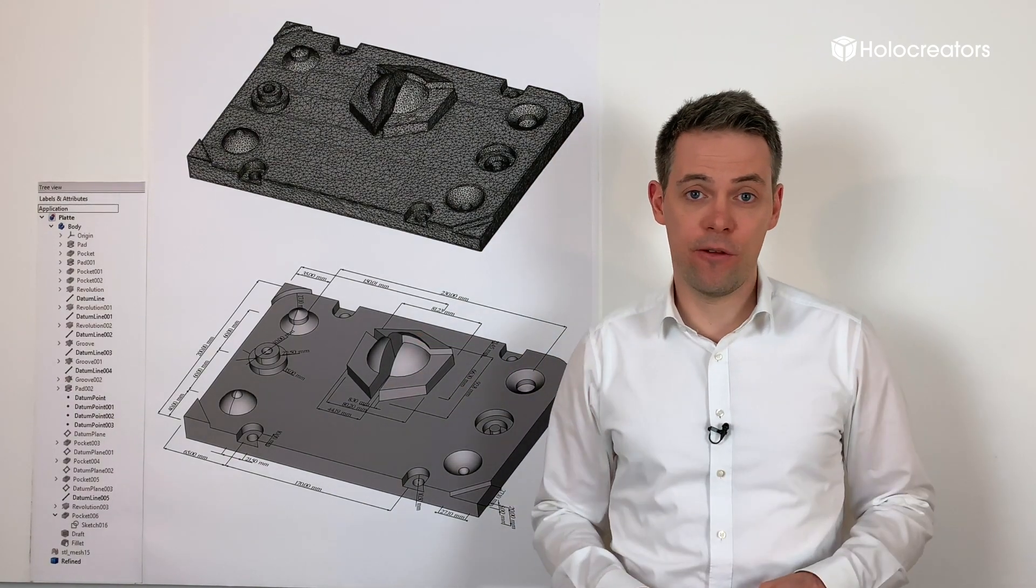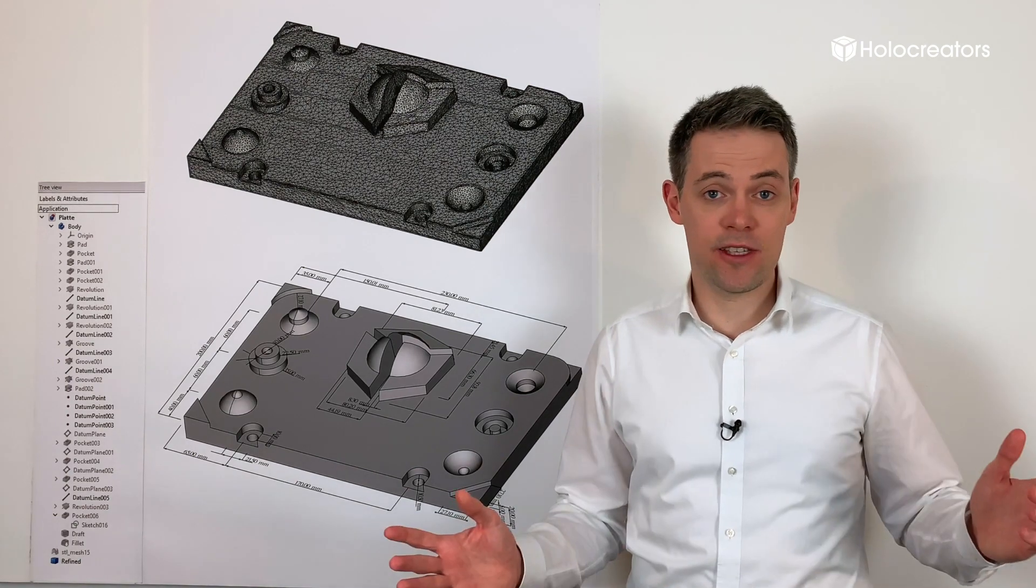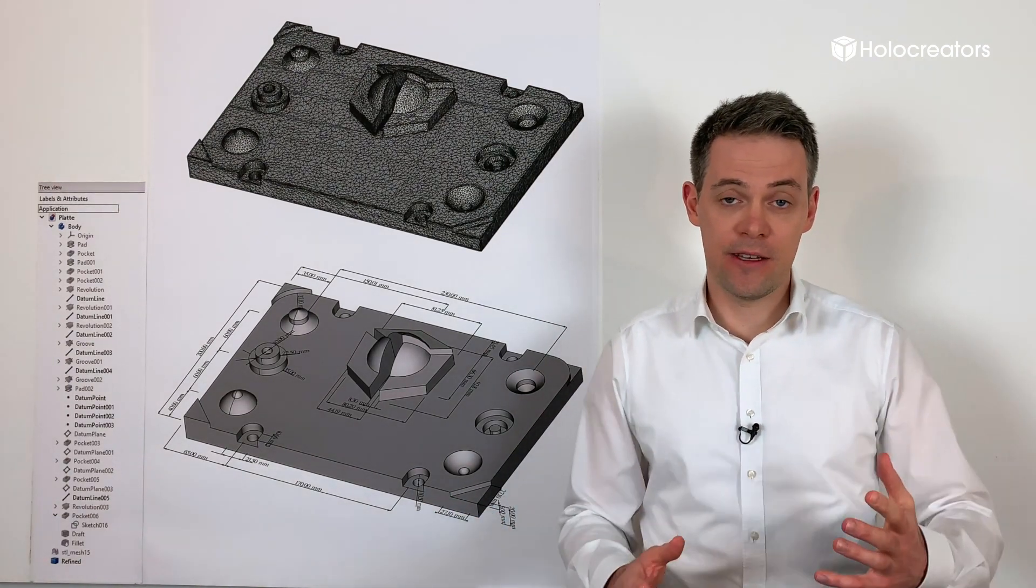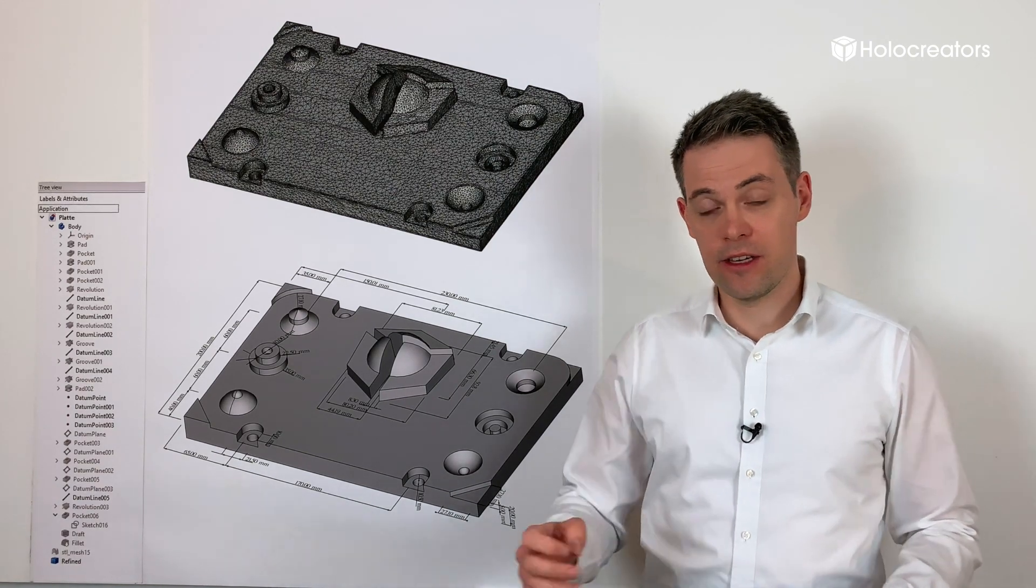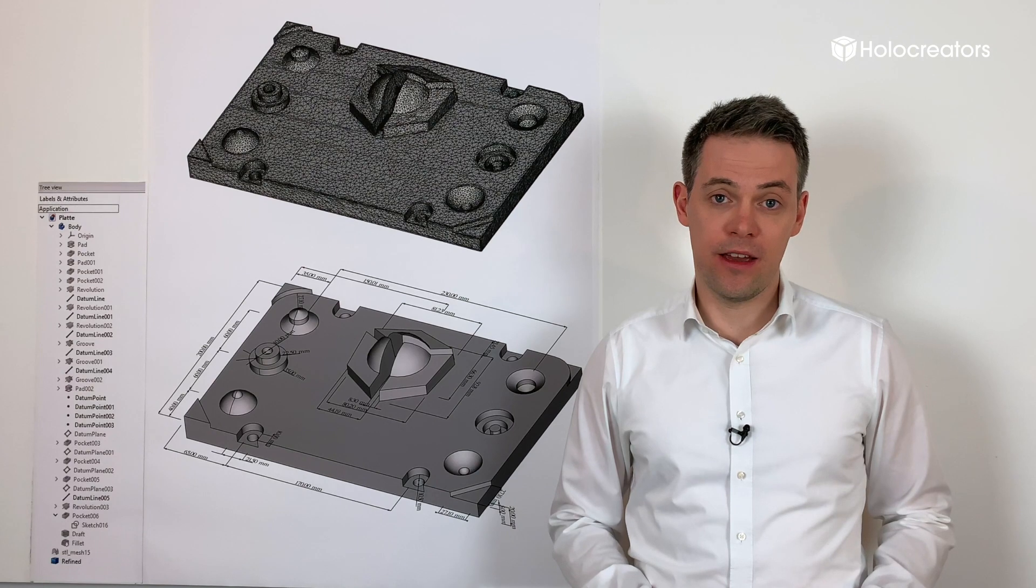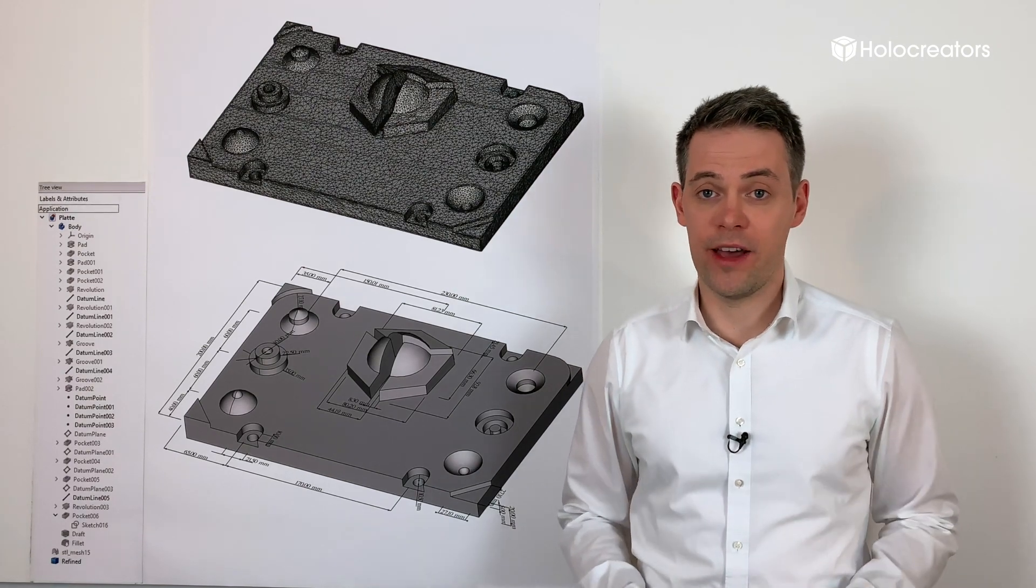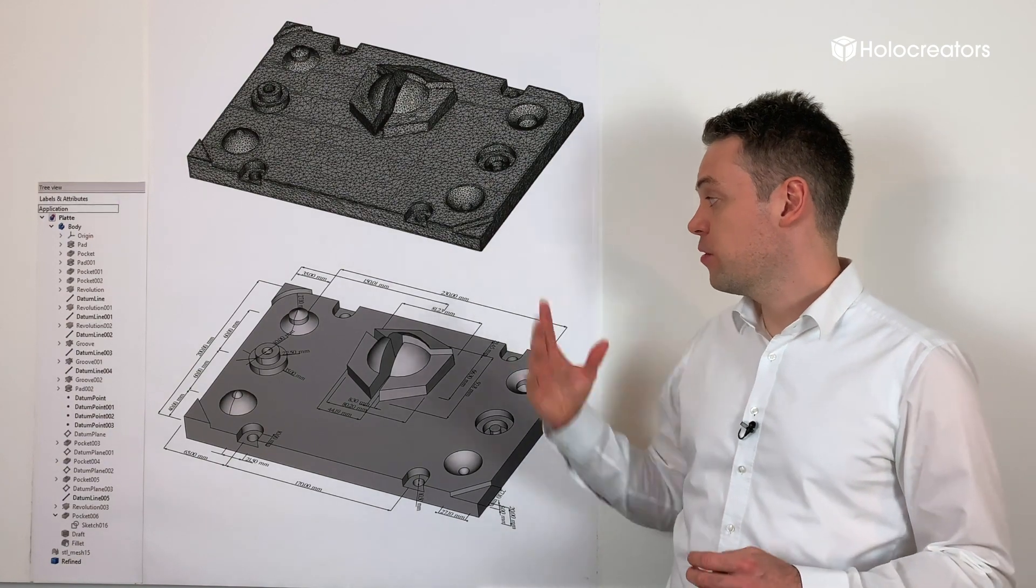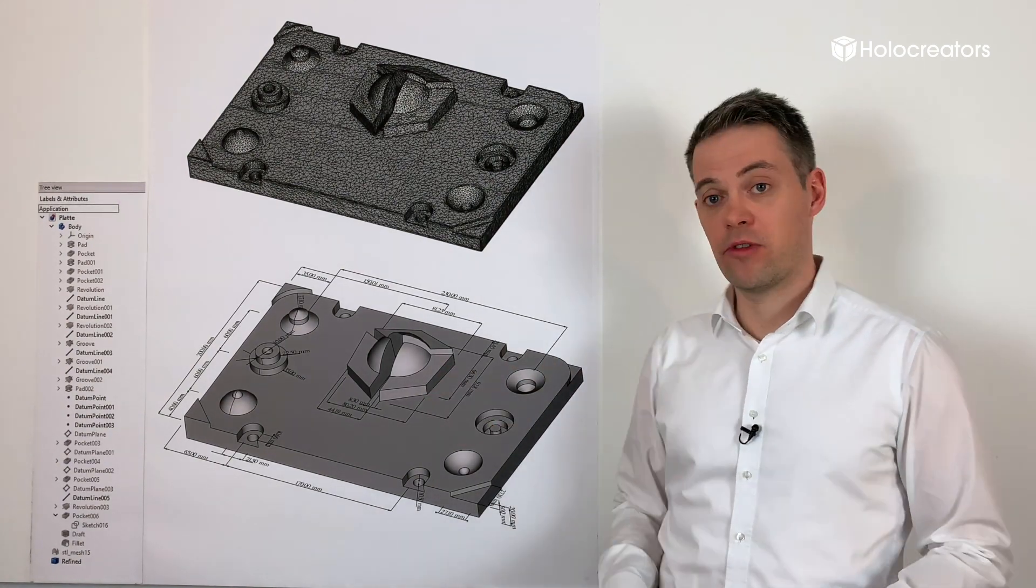We make this reverse engineering for any CAD software on the market, so we will provide you with a native CAD format that you can directly import into your CAD software. Also, with every reverse engineering, we will provide a deviation report that shows you the deviation between the original 3D scan and the parametric model so you can check the accuracy of our work.